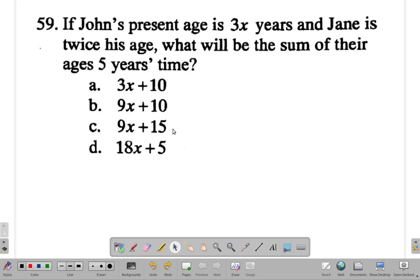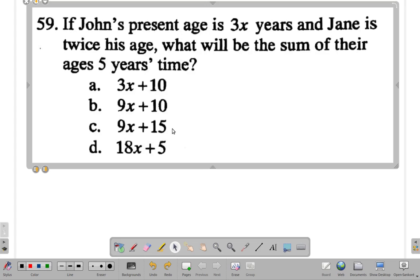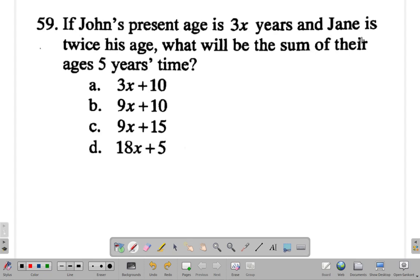Question 59. If John's present age is 3x years and Jane is twice his age, what will be the sum of their ages in five years time? All right, take a minute and a half to do this and let's see what you get.